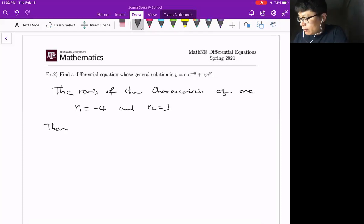Then the characteristic equation is R plus 4 times R minus 3 equals 0.